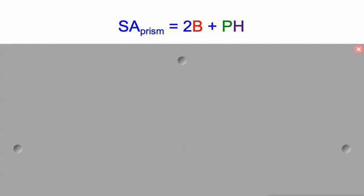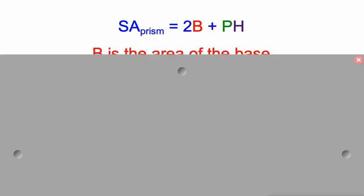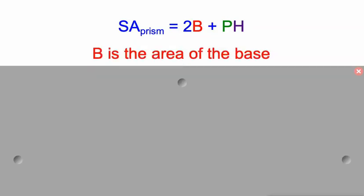2B plus P times H, where B is the area of the base. The net of any prism is always going to have two bases, so we're going to multiply that by two.